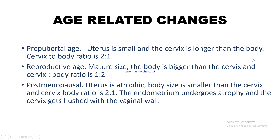Age-related changes in the uterus occur across three groups: pre-pubertal, reproductive age, and post-menopausal. Pre-pubertally, the uterus is small and the cervix is longer than the body, with a cervix-to-body ratio of 2:1. At reproductive age, the body becomes bigger than the cervix, with a ratio of 1:2. Post-menopausally, the uterus is atrophic, the body is smaller than the cervix again at 2:1, the endometrium undergoes atrophy, and the cervix becomes flush with the vaginal wall.